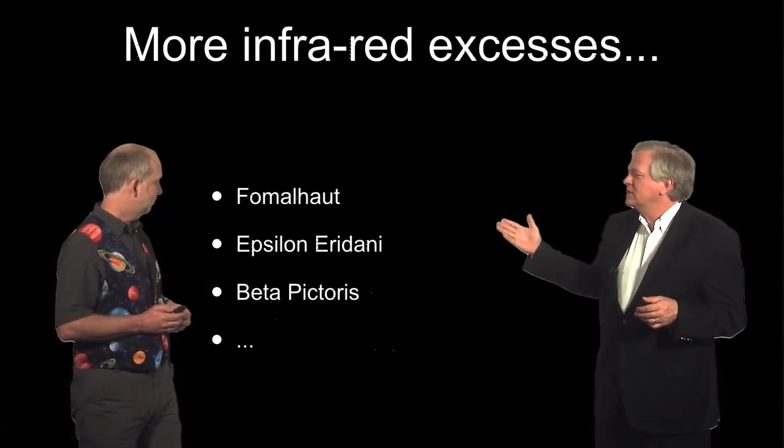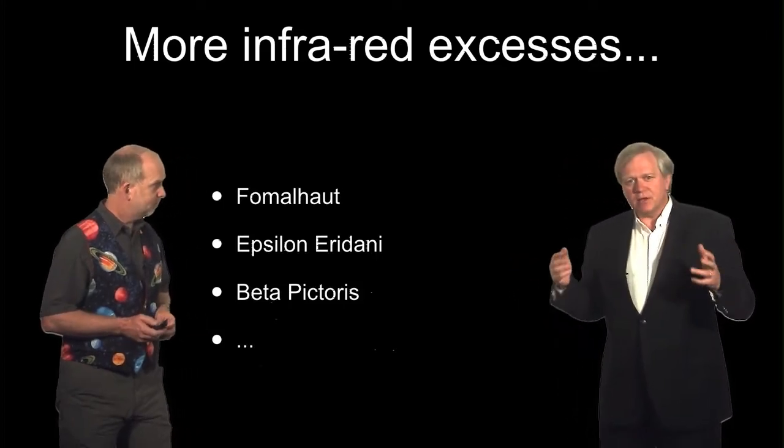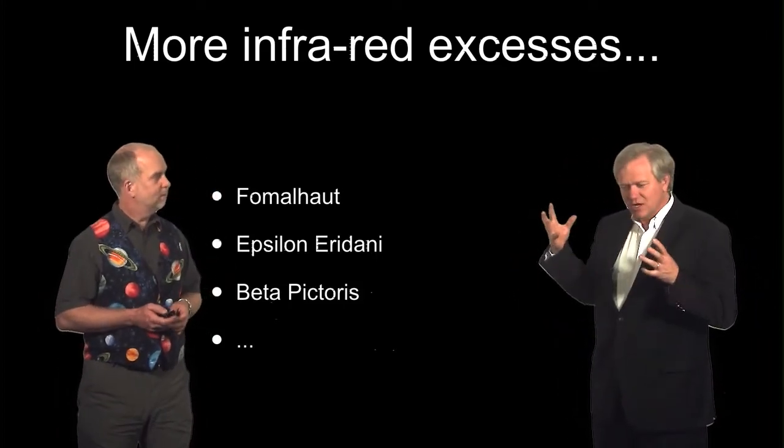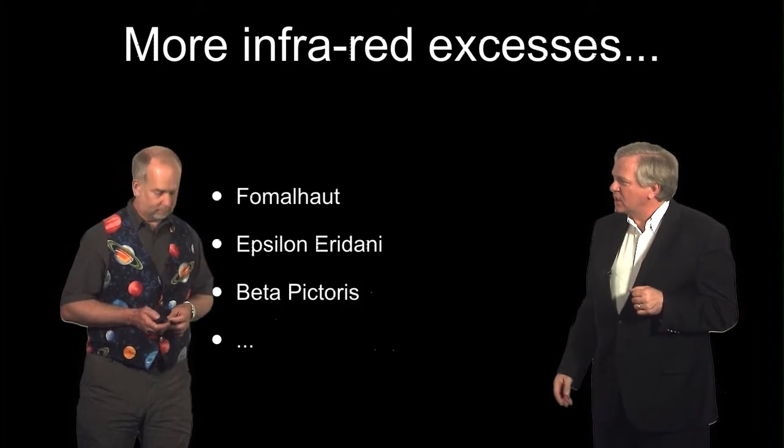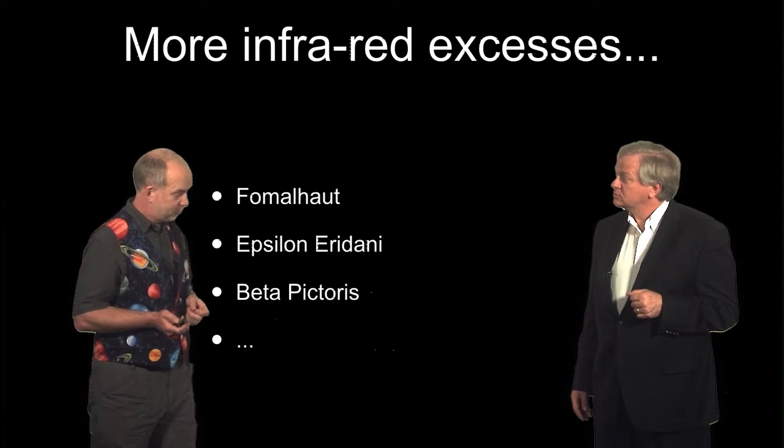For example, Formalhaut, one of my favorites, Epsilon Eridani, and Beta Pictoris—they seem to have this excess of infrared light. And in a few of these cases where the stars are the nearest, you can actually look and see where it's coming from.